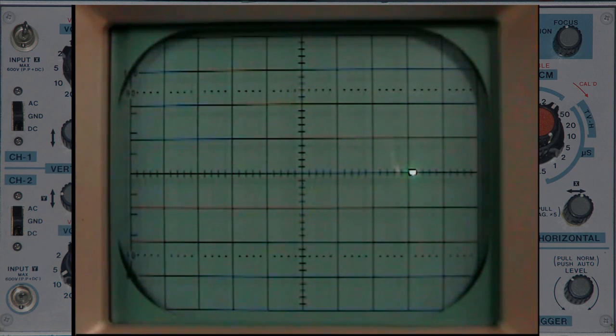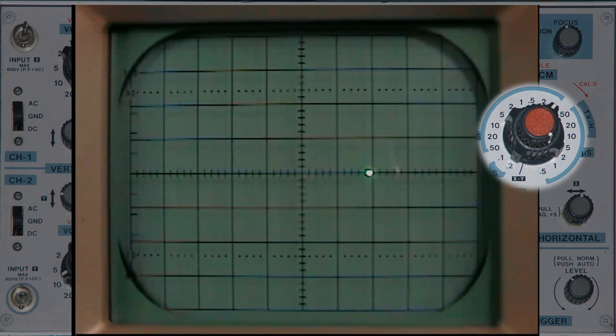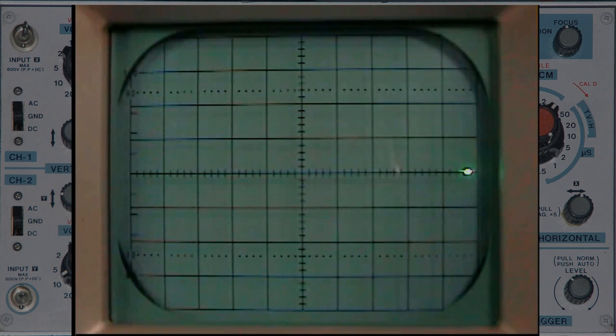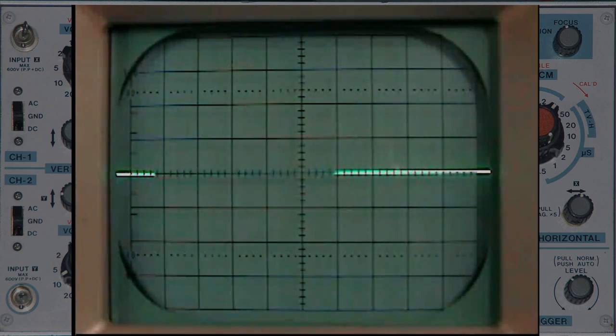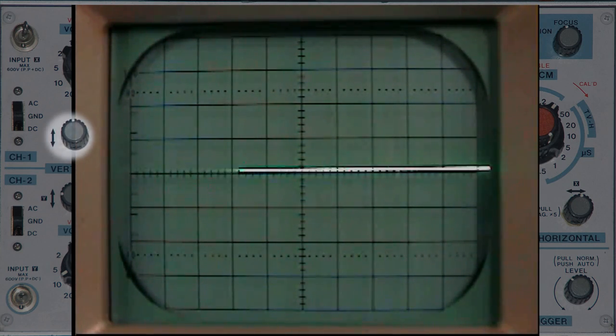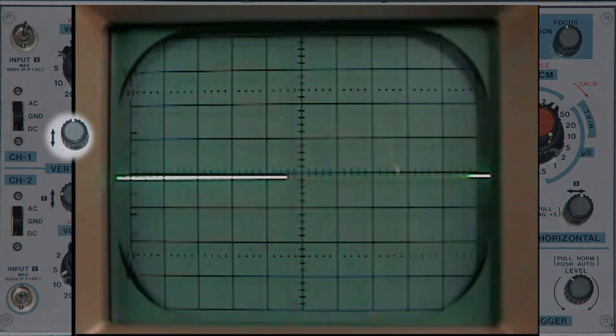This is with the time base at 0.2 seconds. There's 0.1, 50 milliseconds, 20 milliseconds, 10, 5, and 2 milliseconds. I'm going to increase the intensity. Here's the position of the vertical.